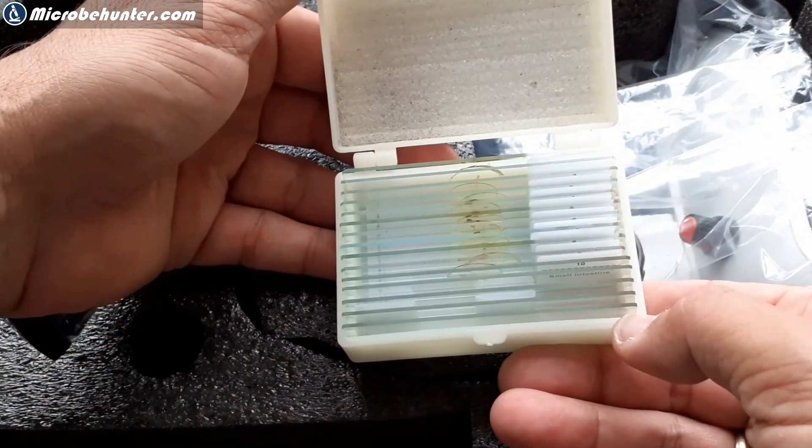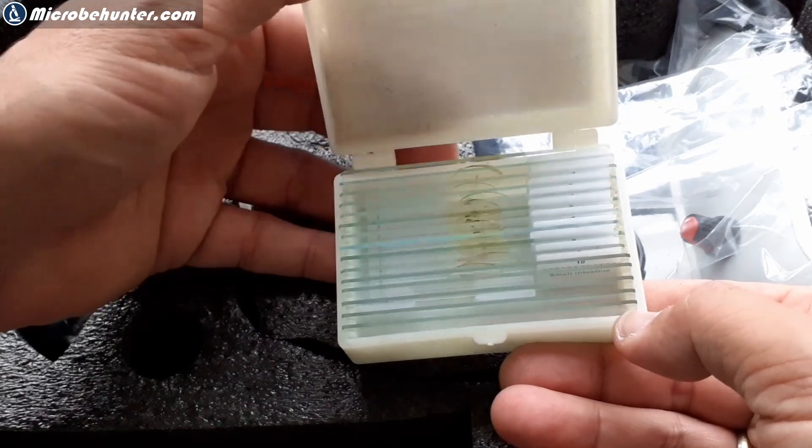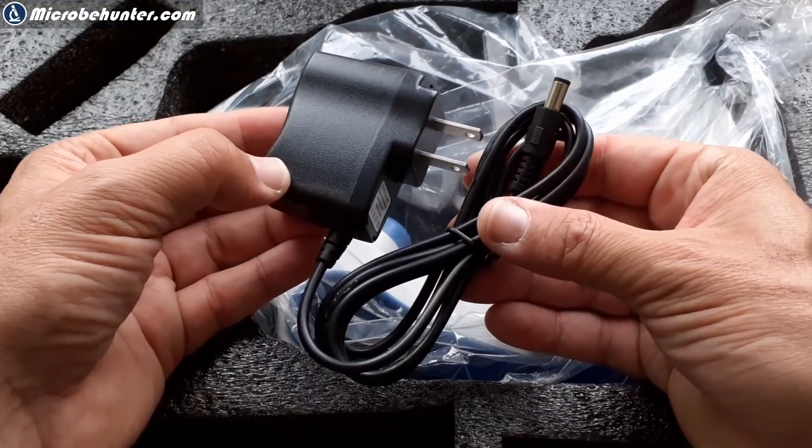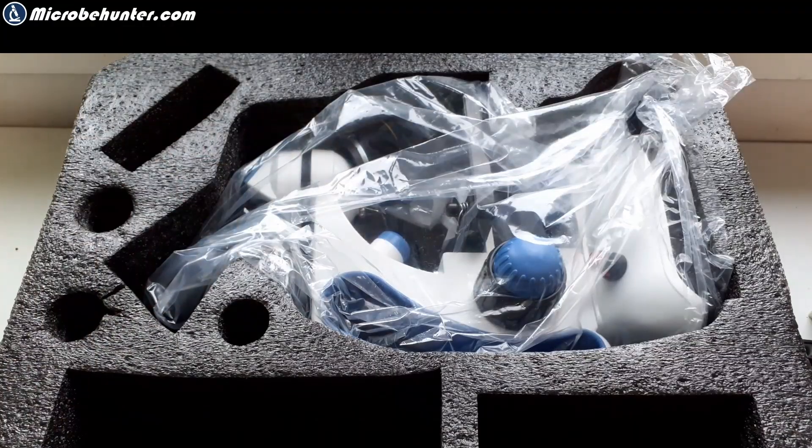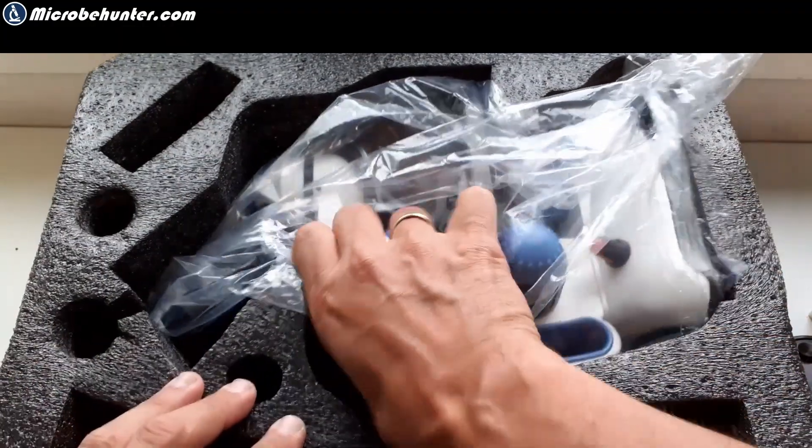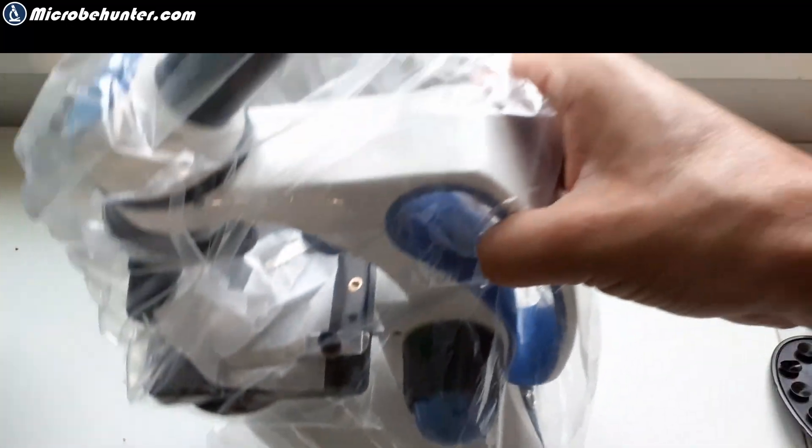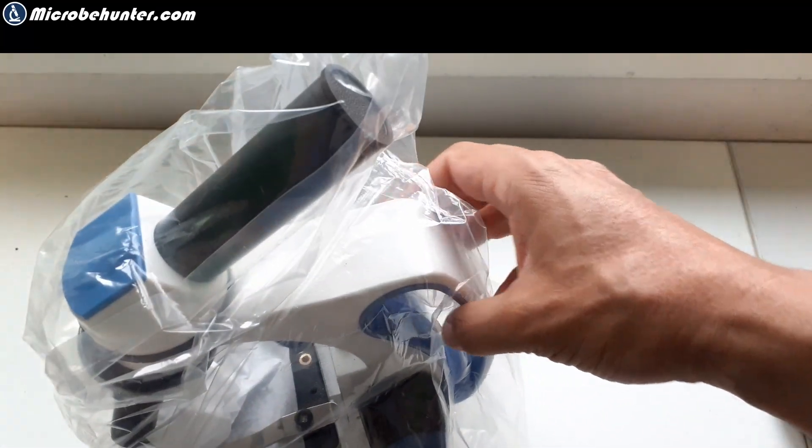There's a set of slides, prepared slides. They're quite nice and there's also a description about them in the manual. There is a power adapter, but the microscope can also be powered by battery and this makes it very portable. So let's take it out. Let's have a closer look now at what we get here.